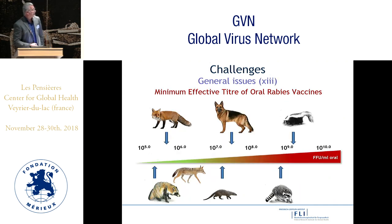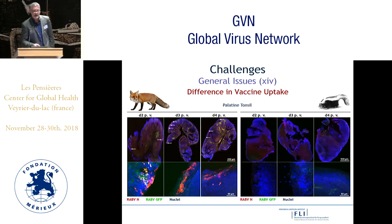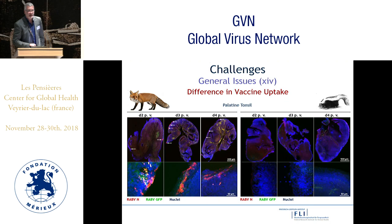Another challenge is the minimum effective titer needed to elicit an immune response by the oral route. It is fairly easy to vaccinate foxes and raccoon dogs, but for skunks and raccoons you need a thousand-fold higher minimum effective dose to see a similar effect. Research comparing fox and skunk vaccine uptake post-vaccination showed foci of replicating rabies vaccine virus in fox tonsil tissue up to four days post-infection, but no such foci in skunks — and we do not know why.